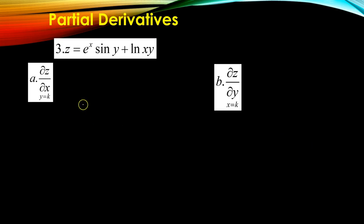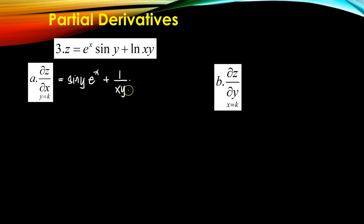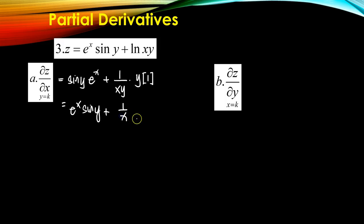Let's go to another example. For the partial of z with respect to x, y is constant. You can move the constant out, and the derivative of e^x is simply e^x. For the ln term, since x and y are both inside the ln, but y is constant, the derivative of ln(xy) is 1 over xy times the derivative of xy with respect to x, which gives y times 1. So the answer is e^x · sin(y) + 1/x.